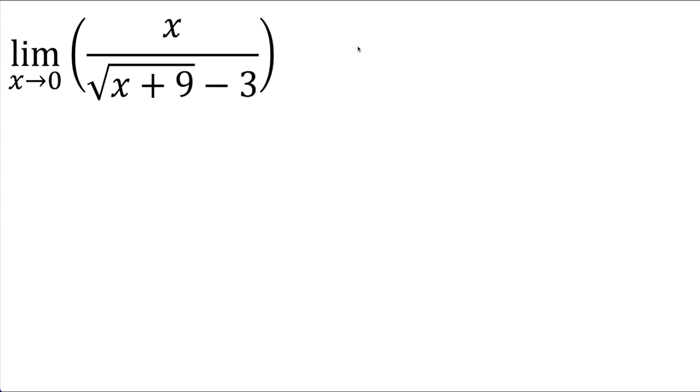And in the description box I have a series of categorized limit problems where we have different methods to tackle these kind of problems. There's also random limit problems in the description box. So this method is called multiply by the conjugate.